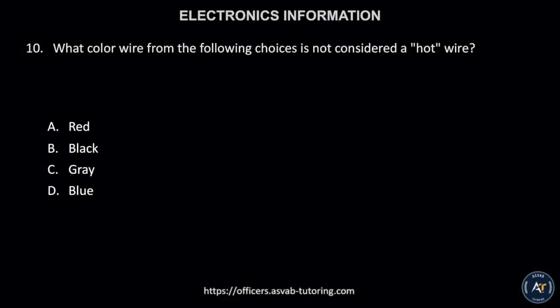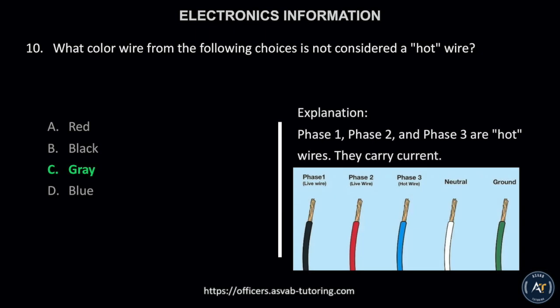Number 10. What color wire from the following choices is not considered a hot wire: A. Red, B. Black, C. Gray, or D. Blue? The correct answer is letter C, gray. This is because phase 1, phase 2, and phase 3 are hot wires — they carry current.